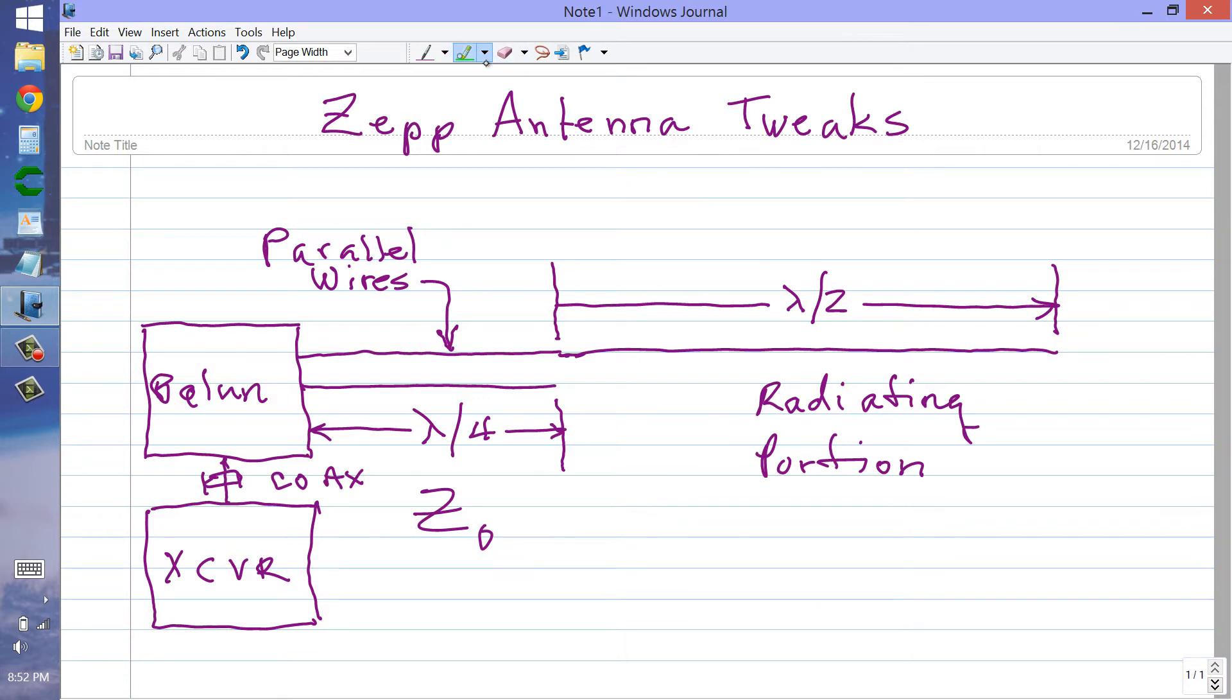This half-wavelength section is a length of wire cut to that length in free space, taking the velocity factor of the wire into account, which is about 0.95. If you build an antenna to these specific dimensions, it's always going to require some adjustment.